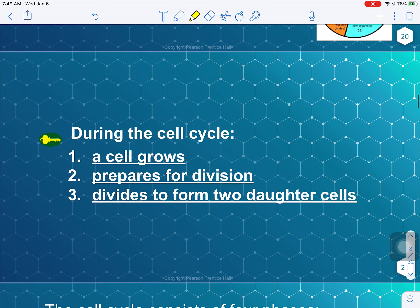So during the cell cycle, three things have to happen to the cell. The first is that the cell is going to grow and do its normal thing. Then when it's ready, and if it's not a nerve cell or another cell stuck in interphase, it's going to prepare for division. And lastly, it's going to divide to form two new daughter cells, the division part of the cell cycle. After you have your two new daughter cells, the whole cycle starts over again from the beginning.